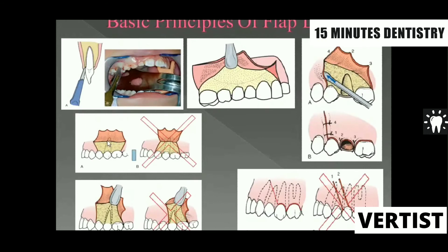The second principle: whenever you are placing a vertical releasing incision, it should always be placed at the line angle of the tooth — where the buccal surface and the mesial surface meet. With this incision, we can preserve the papilla of the adjacent tooth. We should not place the incision onto the convex part of the tooth, because if you place the incision over the convexity of the bone, post-operative healing is going to be delayed. The third principle: if a sinus is present in the region, it should always be included within the flap.